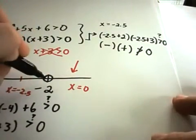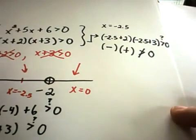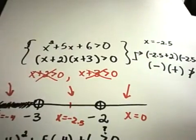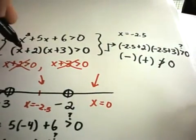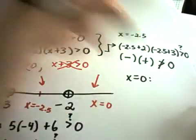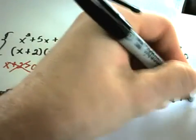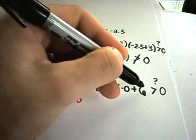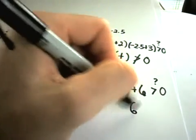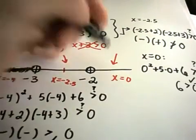For the last interval, I'll take a number bigger than negative 2 — let's pick x equals 0, which makes the arithmetic easy. Plugging into the original inequality: 0 squared plus 5 times 0 plus 6 equals 6. Is 6 greater than 0? Yes. So numbers greater than negative 2 also work.